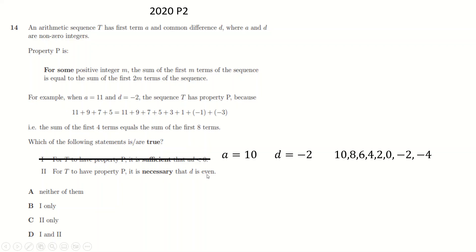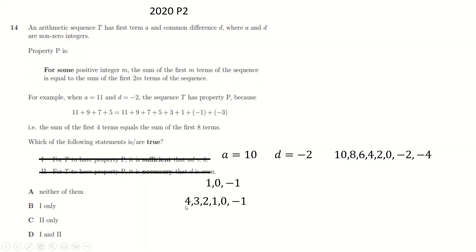Is it necessary that the difference d is even to make this property work? The key was the cancelling action — but we can make that work with a difference of 1, which isn't even. With a difference of 1, the sum of the first one term equals the sum of the first two terms, and separately three terms cancel so the sum of the first three equals the sum of the first six. So d even is not necessary because d can be odd and it still works. Neither condition holds.